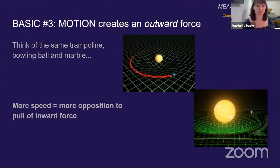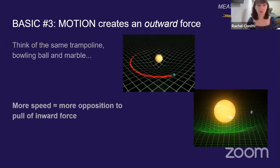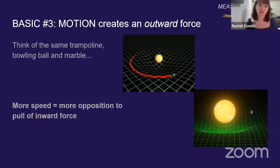Due to the forces of gravity experienced by mass creating an inward pull — think of the same trampoline, the bowling ball and the marble. If you just drop the marble softly, it's going to go straight into the bowling ball's gravitational well. But if you roll it along the side with great speed, it'll spin a lot and avoid falling in for quite a while.